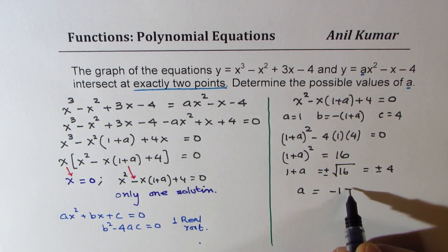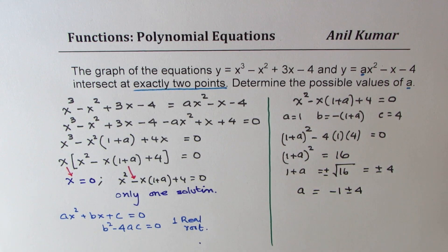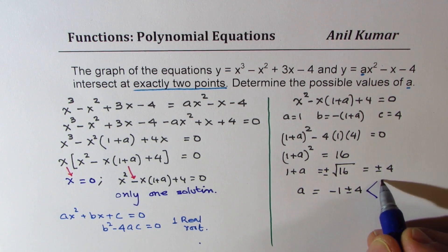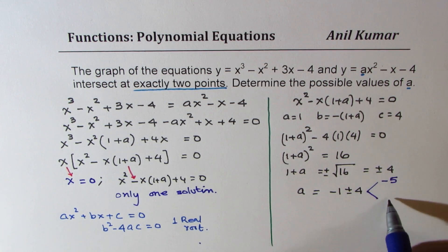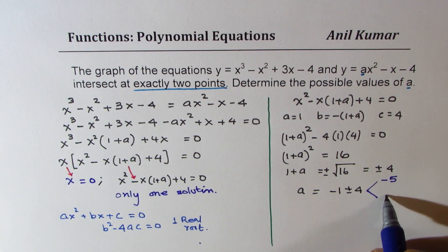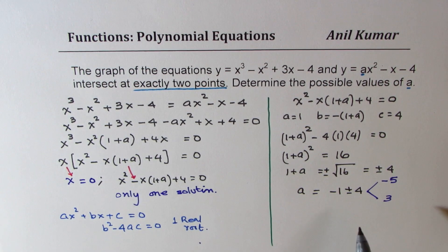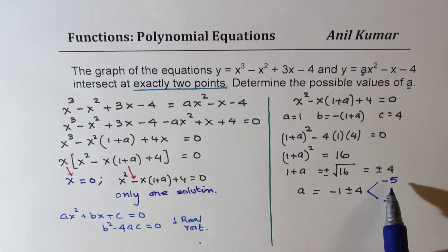So that gives you the value of a as minus 1 plus minus 4. So the two possible values of a could be minus 5 if I take both negative, or it could be plus 3.